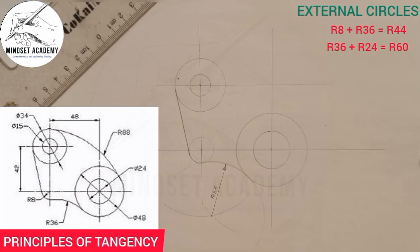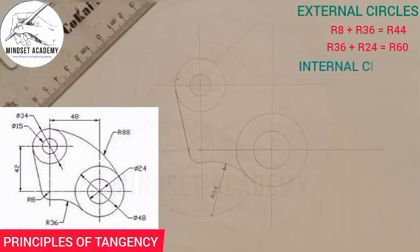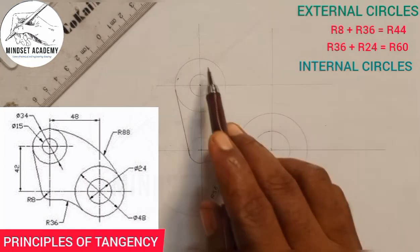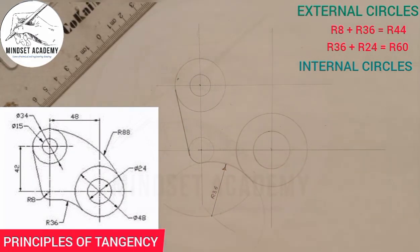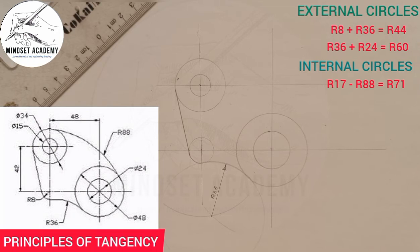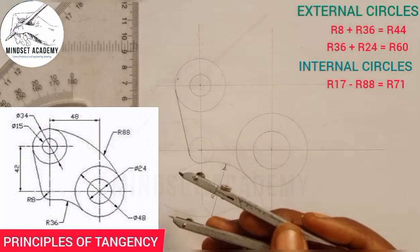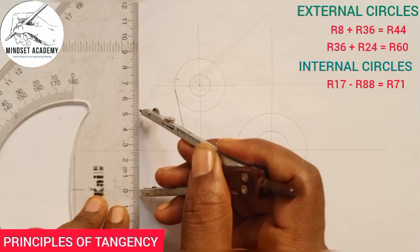The next circle touches these two circles but it is internal — for an internal circle you subtract. I will explain: for internal tangency we subtract. The radius of this circle is 17, and 17 minus 88 gives 71. I measure 71 on my meter rule from 0 to 71.